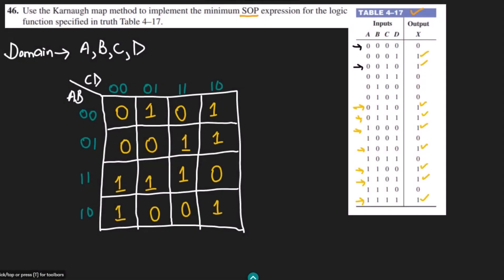Now I have to combine them as in previous Karnaugh map questions. First, combining these two 1s which make a group of 2 — this is the first group. Similarly, two more 1s form the second group. There is a third group and a fourth group where one 1 pairs with another 1. The last 1 stands alone.